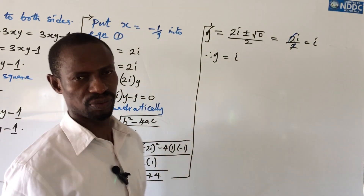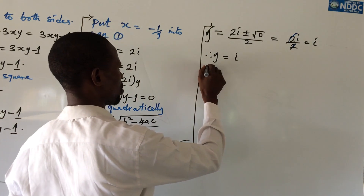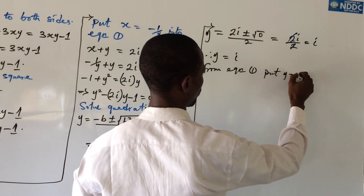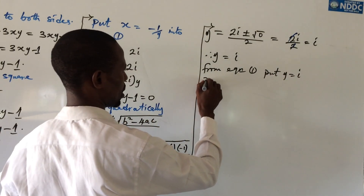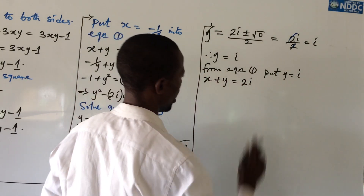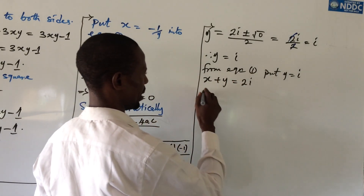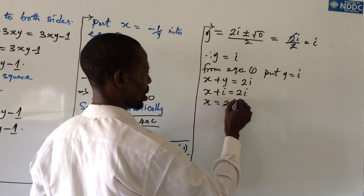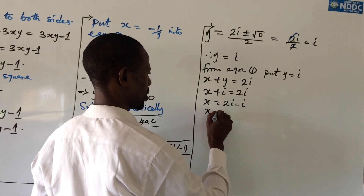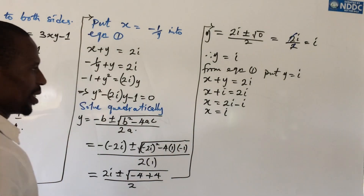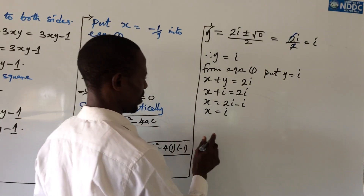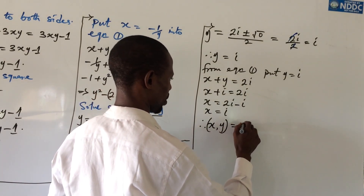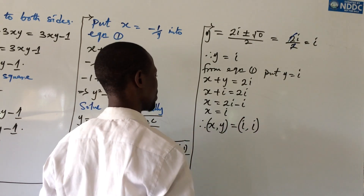We now substitute y equals i into equation 1. Equation 1 says x plus y equals 2i, so x plus i equals 2i, which gives x equals 2i minus i, therefore x equals i. So our solution is x equals i and y equals i, written as (x, y) equals (i, i).